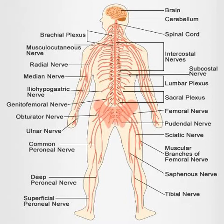Nerves that exit from the cranium are called cranial nerves, while those exiting from the spinal cord are called spinal nerves. At the cellular level, the nervous system is defined by the presence of a special type of cell called the neuron, also known as a nerve cell.